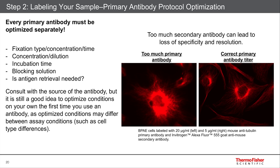You definitely want to optimize the fixation time, what fixative you want to use, and the time for it — very much the concentration or dilution of your antibody. Do you want one microgram per mil, or five or ten micrograms per mil on your sample? You usually want to try a range of different concentrations. Also, incubation times — it's not uncommon to do 30 minutes or an hour with your primary antibody on cells, maybe several hours for tissue or even overnight at four degrees. Which is best for your antibody of interest?